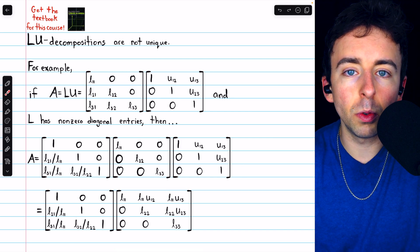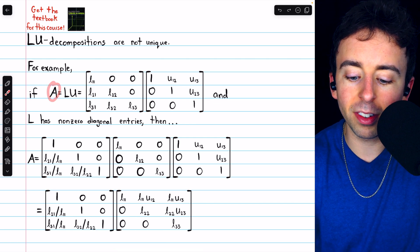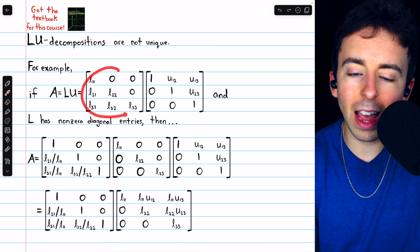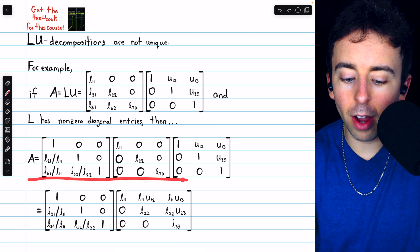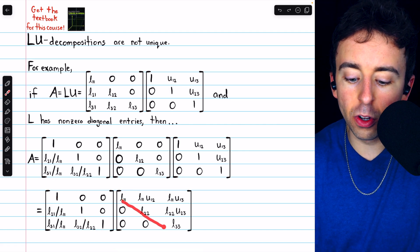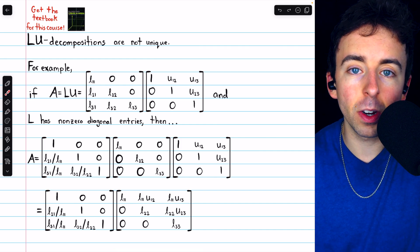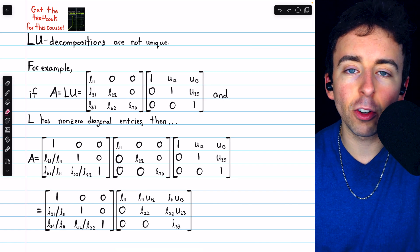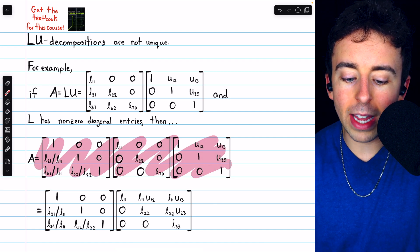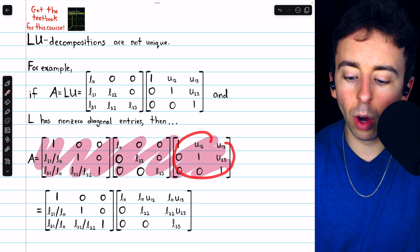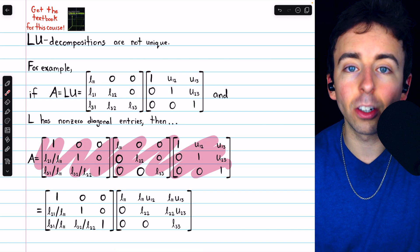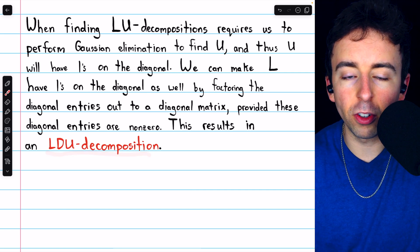Interestingly, when we discussed how to find LU decompositions, we performed Gaussian elimination on A to obtain U, so U has ones in its diagonal entries. L may not have ones in the diagonal entries, but through this process we've now given L ones in the diagonal entries, whereas our new upper triangular matrix may not have ones there. At times it may be desirable to have ones in the diagonal entries of both L and U, leading to a factorization where those non-one diagonals are factored into their own diagonal matrix. This is where LDU decompositions come from.